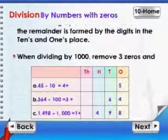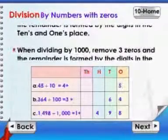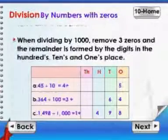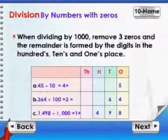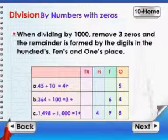When dividing by 1000, remove three zeros and the remainder is formed by the digits in the hundreds, tens and ones place.